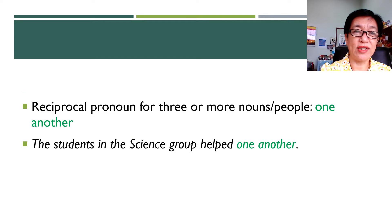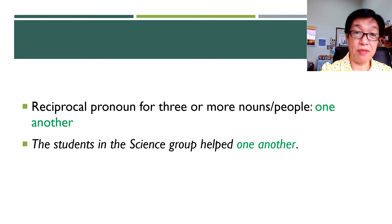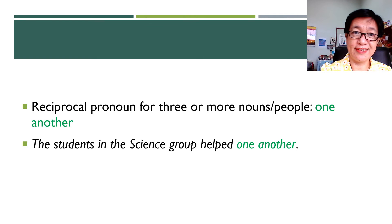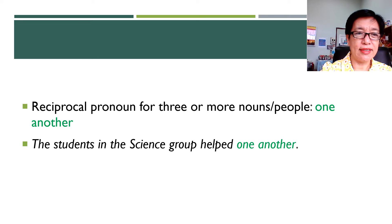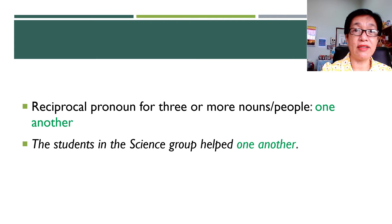What is the other one? Reciprocal pronouns for three or more people or three or more nouns: 'one another.' The students in the science group helped one another — so we are talking of a group here.